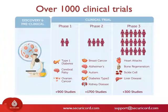Stem cell research is one of the fastest-growing branches of medical research. Currently, there are over 1,000 clinical trials exploring the use of both cord blood and cord tissue stem cells to treat diseases like osteoporosis, Alzheimer's, diabetes, breast cancer, liver failure, and arthritis.